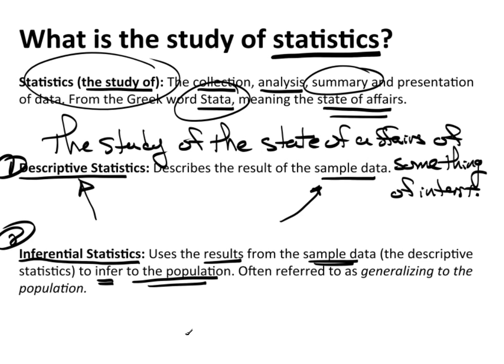And also, this is often referred to simply as generalizing to the population. Now, here's the idea. Remember up here I said like 62% of the sample said whatever, they're going to vote for whoever.